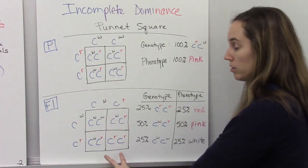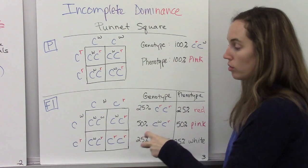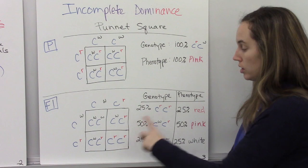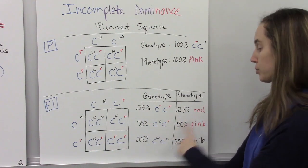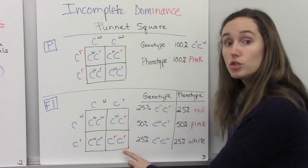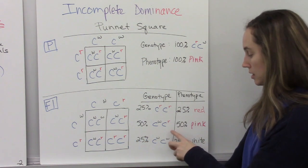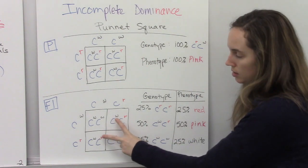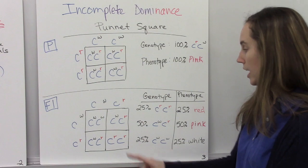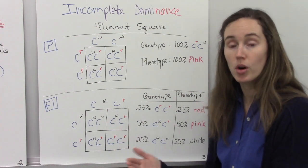And then, as always, we're going to drop these alleles down into these boxes, and bring these over, slide to the right. And when we do that, we have 25% of our offspring are red and have the homozygous red genotype. 50% are heterozygous and are pink. And then 25% are homozygous for white and show the white phenotype.